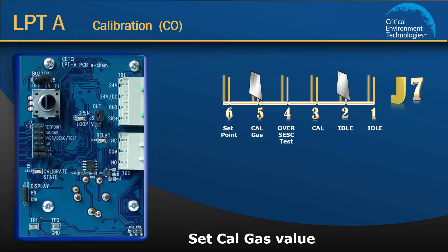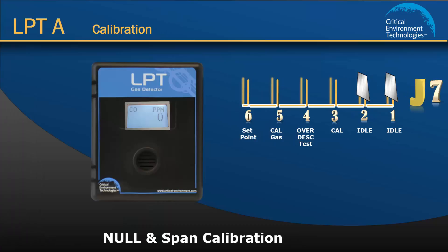To complete the set cal gas value procedure, move the cal gas jumper back to the idle position. The LPTA offers one jumper calibration, meaning you don't have to move jumpers back and forth to different positions when doing the null and span calibrations. The jumper is moved once and remains in the cal position until both calibration procedures are complete.